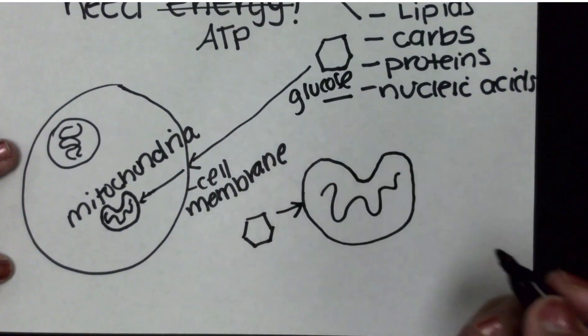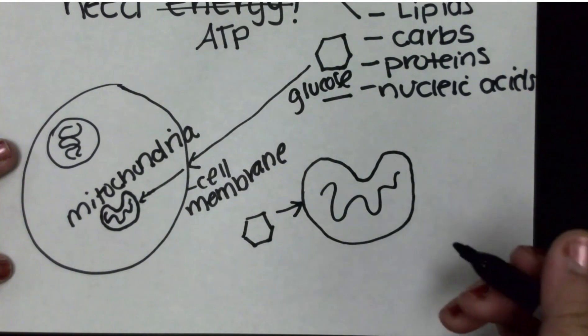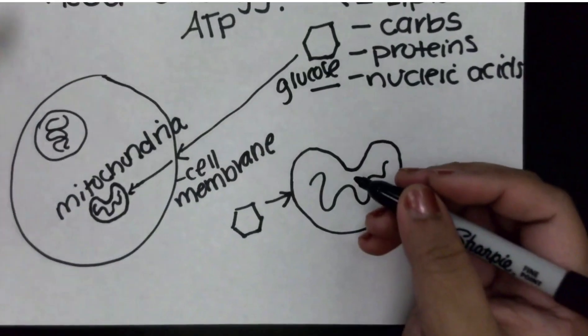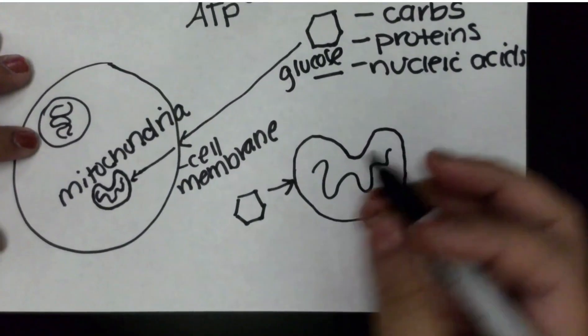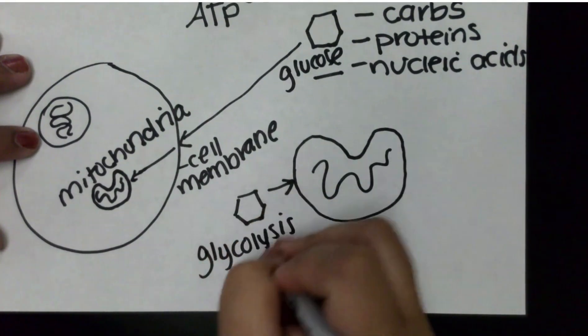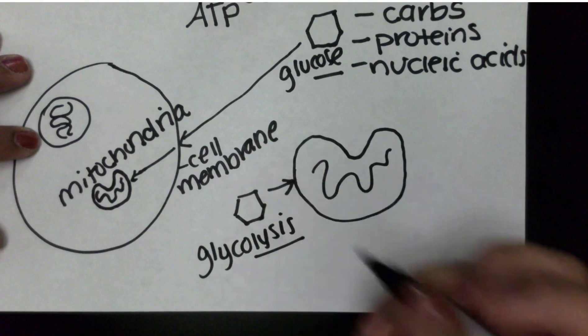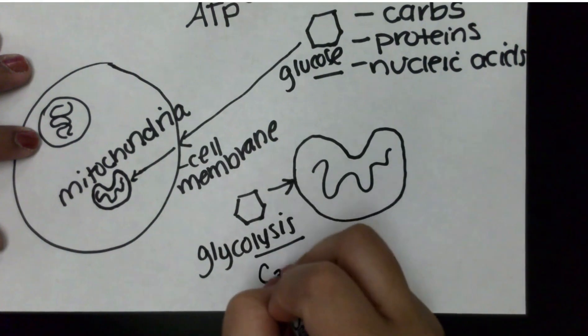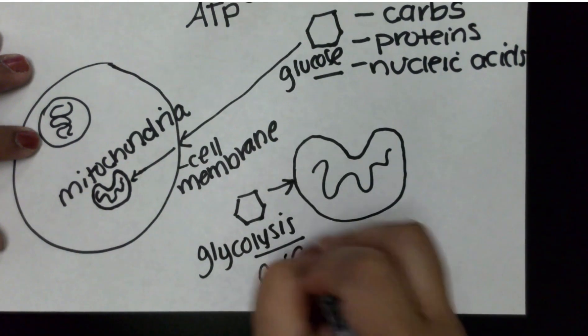And it cannot just go into the mitochondria that easily. First it needs to go through the process of glycolysis, which is the breaking down of this glucose molecule into two smaller molecules called pyruvate.